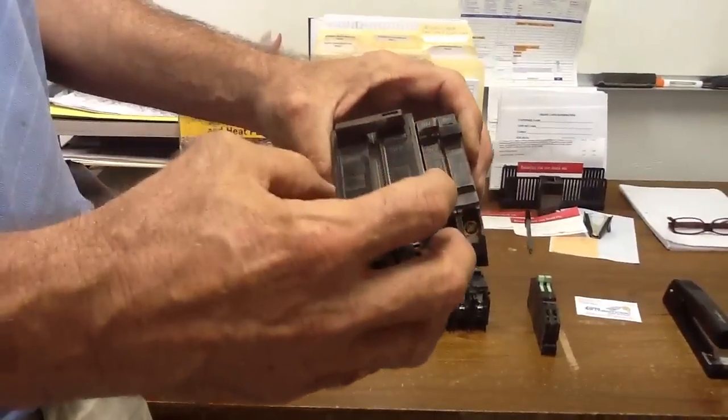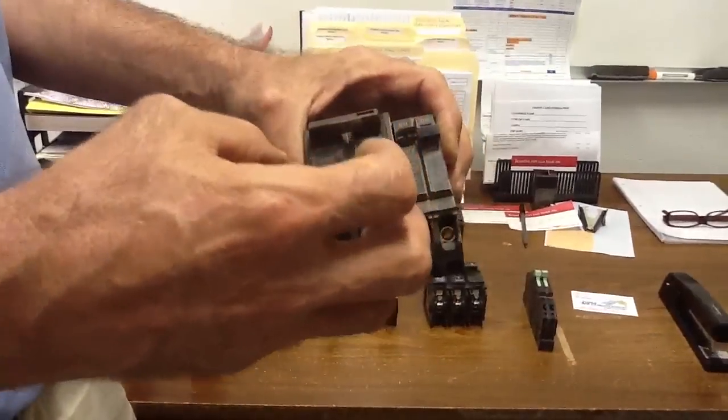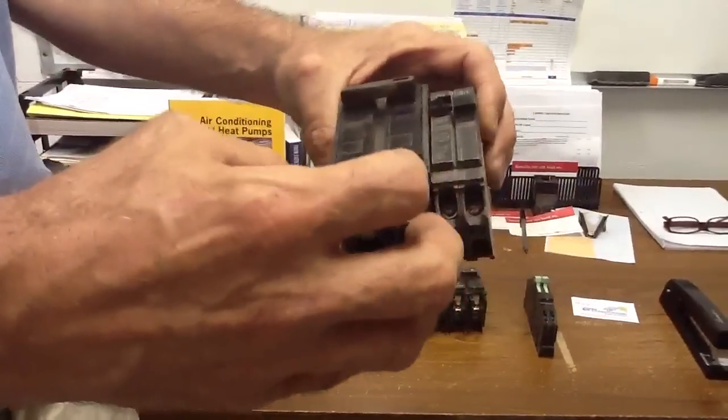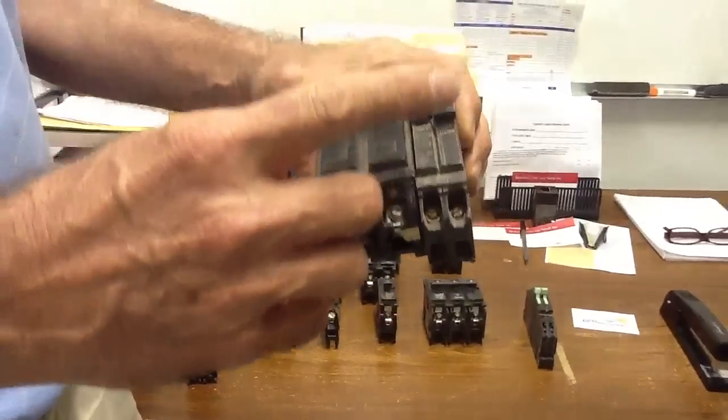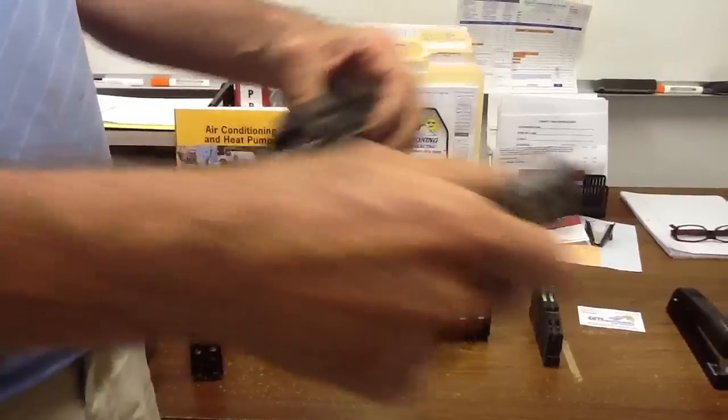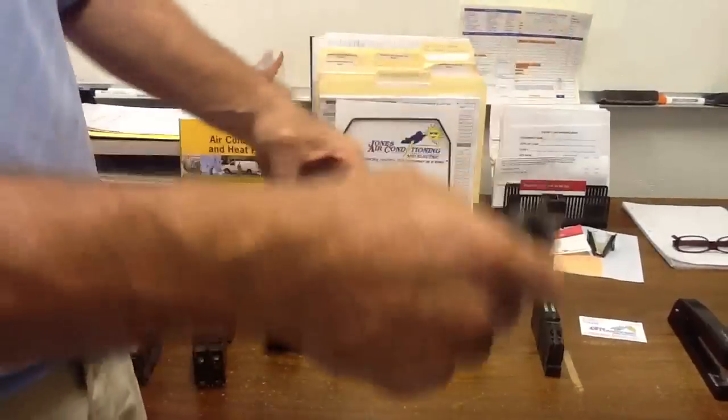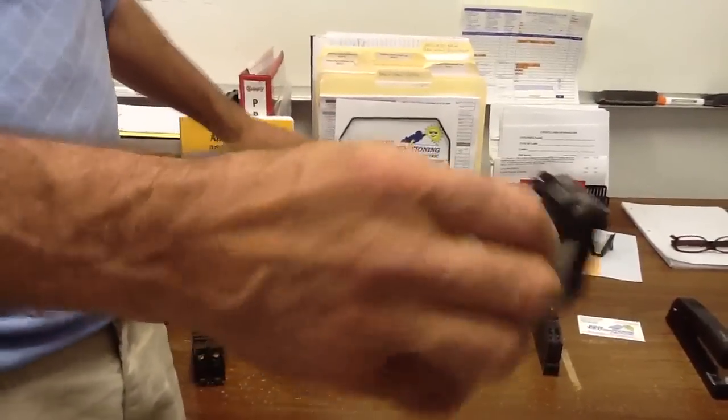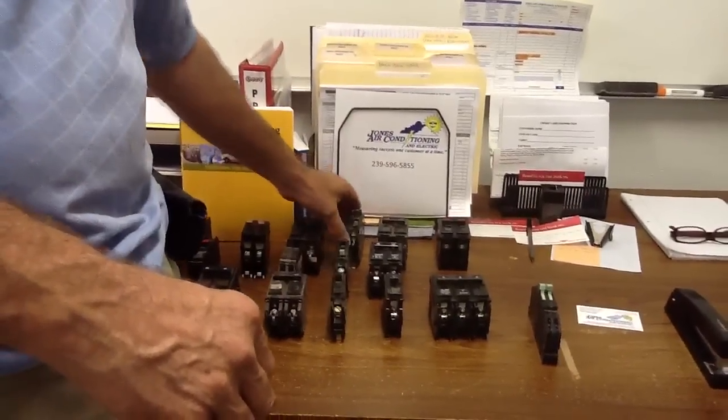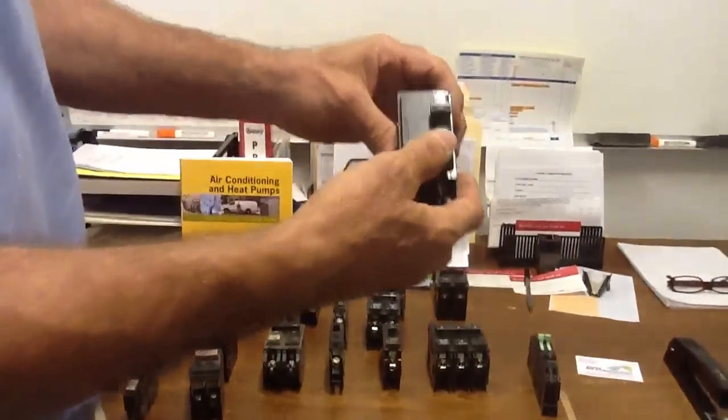Because the insurance company mandated about 20 years ago that you can't interchange breakers from one manufacturer to another, because before that point, you can interchange Bryant with the ITE, with Gull, with Square D Home Line, and for you electricians out there, you understand what I'm saying.